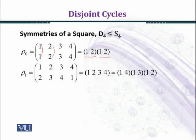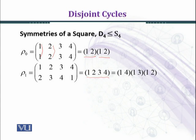Now, ρ₁ is another element of the group D4. We are considering the rotations ρ₀, ρ₁, ρ₂, ρ₃. In ρ₁, 1 goes to 2, 2 goes to 3, 3 goes to 4, and 4 goes to 1 — giving us the cycle (1 2 3 4). We can write this cycle as a product of transpositions. Since we apply permutations from right to left, the last transposition applied should be (1 2).